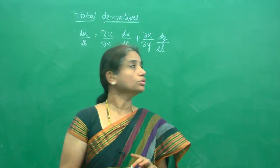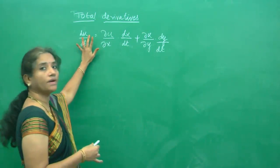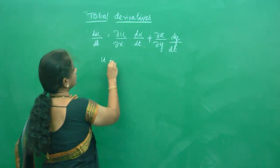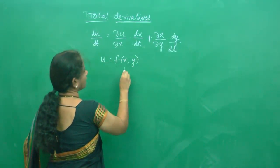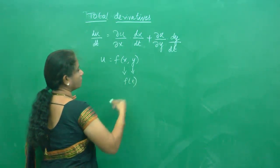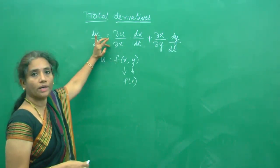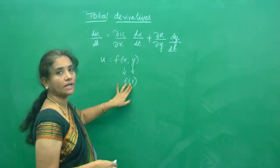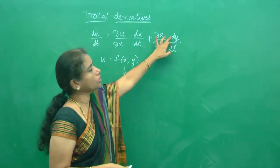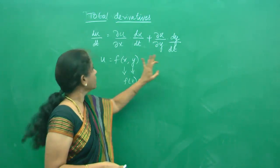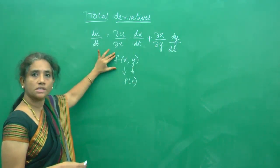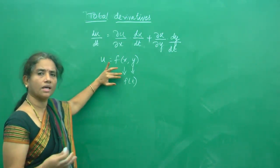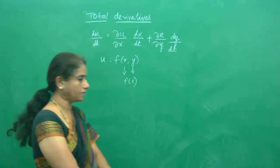In this session, we are going to do total derivatives when u is a function of x and y, where x and y are functions of t. The formula becomes ∂u/∂x times dx/dt plus ∂u/∂y times dy/dt. This is the total derivative of a function which is a function of x and y, whereas x and y are in turn functions of t — or psi, or theta, or anything — but we are going to start with t.